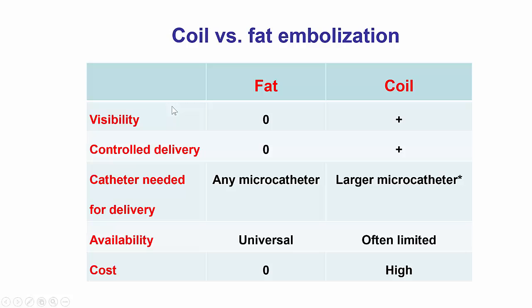There are pluses and minuses for both options. Fat is not visible whereas coils are very visible; one workaround is to dip the fat into contrast to make it visible under X-ray. Regarding controlled delivery, fat is injected whereas detachable coils can be delivered with their optimal position confirmed before releasing. Any microcatheter can deliver fat, but for 0.018 coils a larger microcatheter like a ProGrade may be needed rather than a standard Corsair, Turnpike, or FineCross. However, if the cath lab has 0.014 coils such as the Axiom coils, these can be delivered through a standard microcatheter. Fat is available everywhere; coils are sometimes not available in all labs, and while fat has no cost, coils can be expensive.